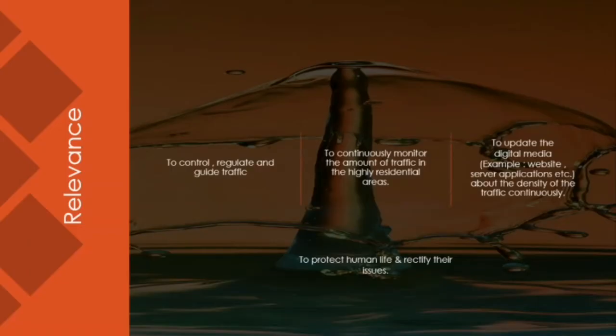So in order to tackle this problem we came up with the idea of an automated traffic control system. Our system is relevant to the actual situation in various manners. The primary drive of our system is to control, regulate and guide traffic. Our system will also be useful to continuously monitor the amount of traffic in highly residential areas such as school areas and office areas.